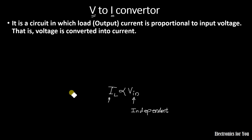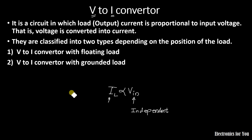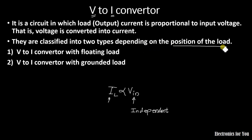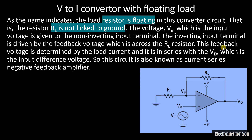The V2I Converter has two types: the first is V2I Converter with Floating Load, and the second is V2I Converter with Grounded Load. Both are classified on the basis of the position of the load. The first one is V2I Converter with Floating Load.